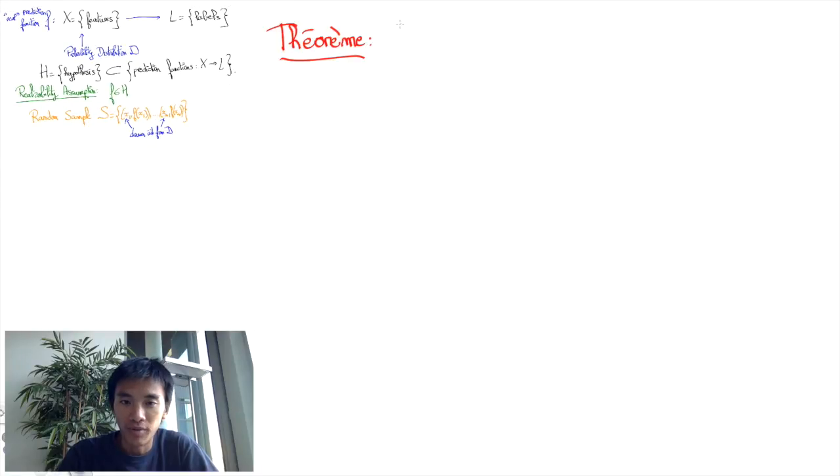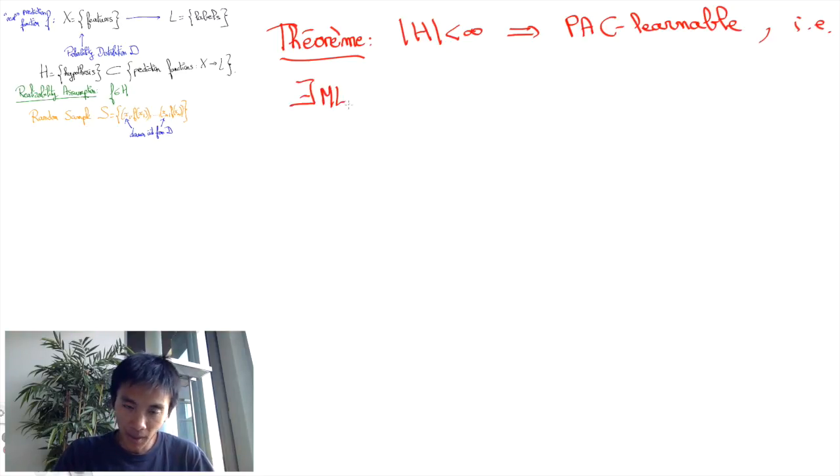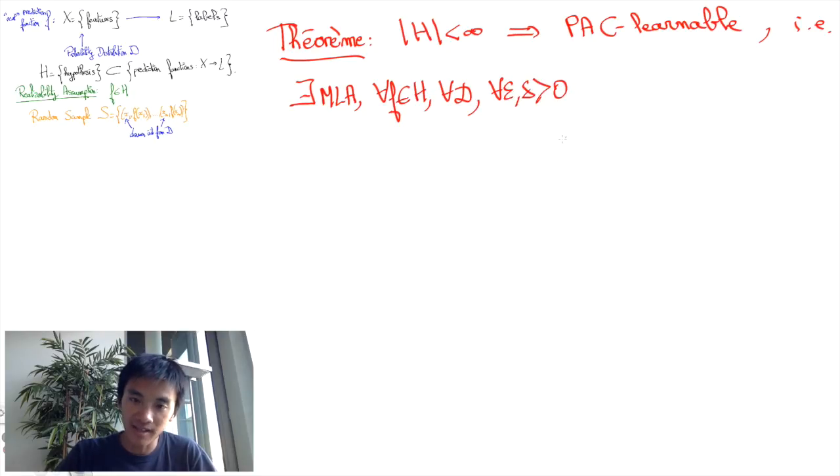Here's the interesting theorem we shall prove in this video. Every finite hypothesis class H is PAC-learnable. Stated differently, this theorem says that there exists a PAC-learning machine learning algorithm such that for any prediction function f of H and any probability distribution D over the set of features X, for any epsilon and delta positive, and any sample size n greater than or equal to the logarithm of the cardinal of H divided by delta, all divided by epsilon,